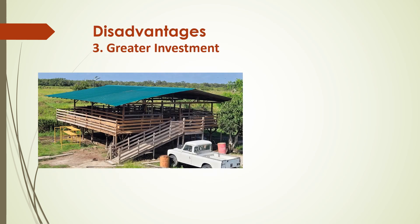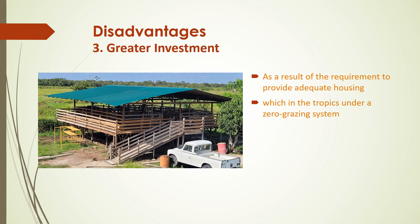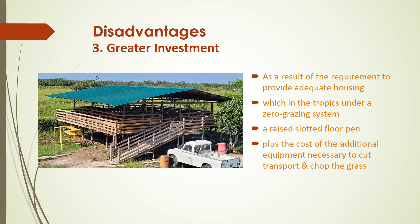The third disadvantage is that our system requires greater investment, and I agree with this. Because of the requirement to provide adequate housing — which in the tropics under a zero grazing system requires the construction of a raised slotted floor pen — plus the cost of additional equipment necessary to cut, transport and chop the grass, your investment will be higher. However, most progressive sheep farmers I know in Guyana, although they open graze their animals, also have raised slotted floor pens in which the sheep are housed at night. Therefore, some of the expense will also apply to their systems of production.